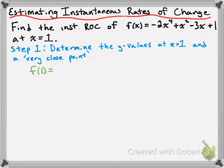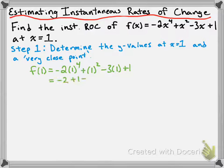So f(1) is going to be -2 times 1 to the power of 4, plus 1 squared, minus 3 times 1, plus 1. Cleaning that up, we get -2 + 1 - 3 + 1, which gives us a value of -3. So f(1) = -3.